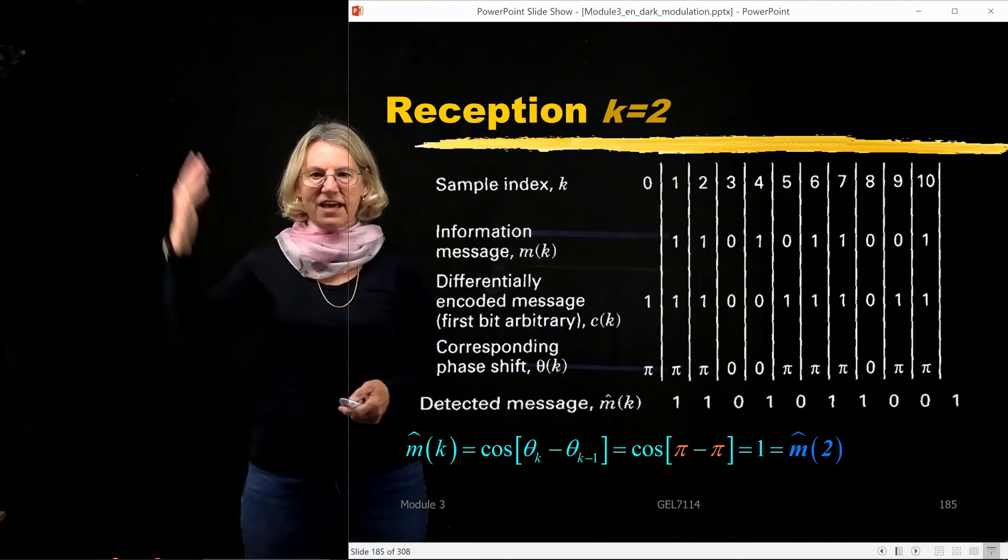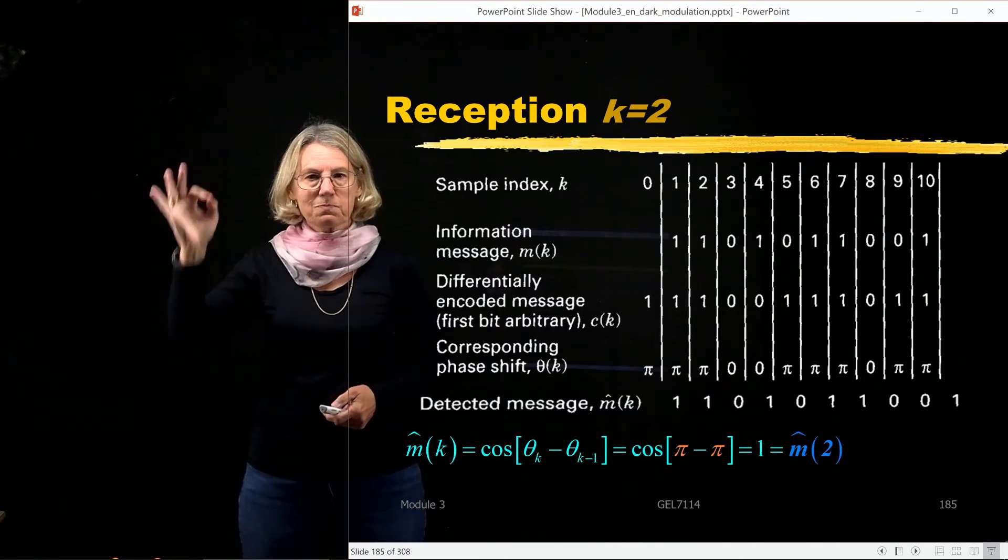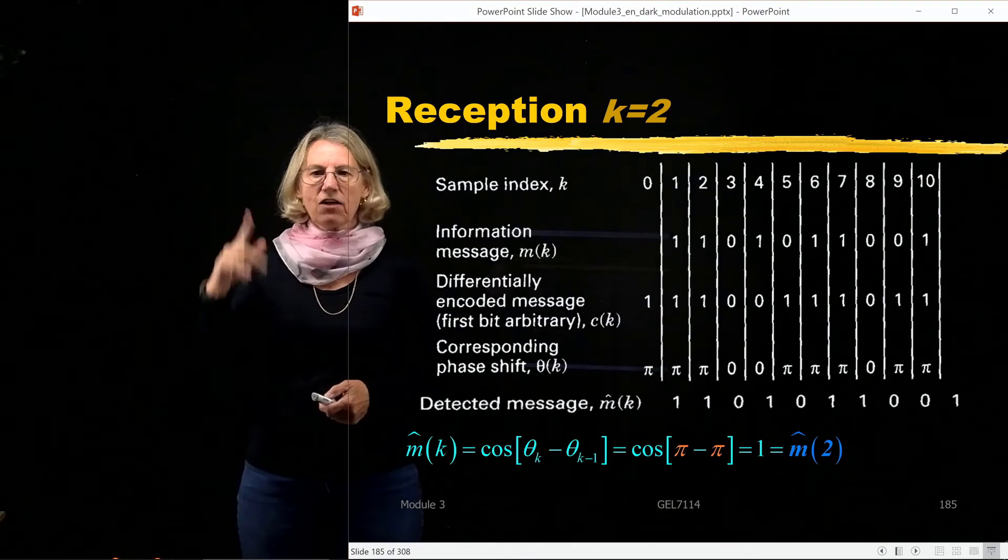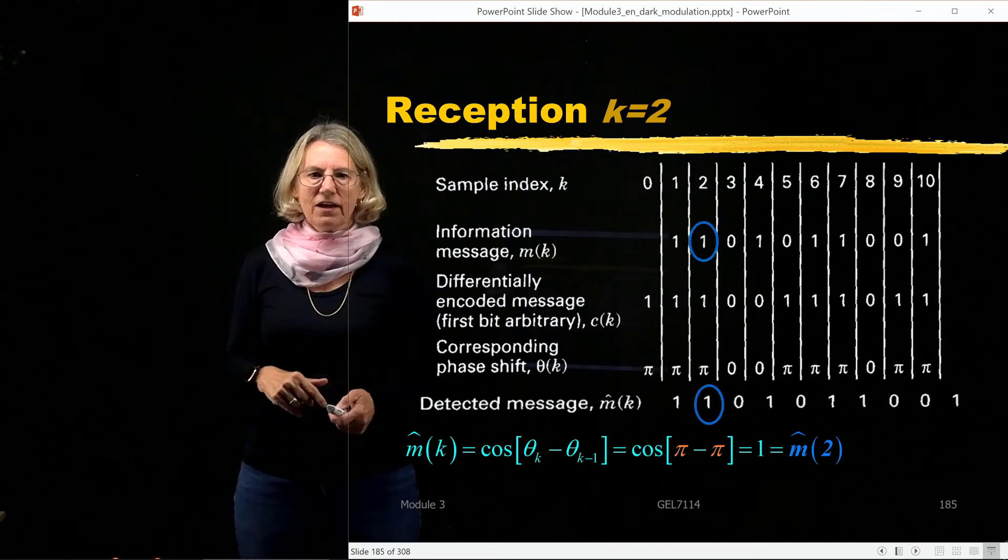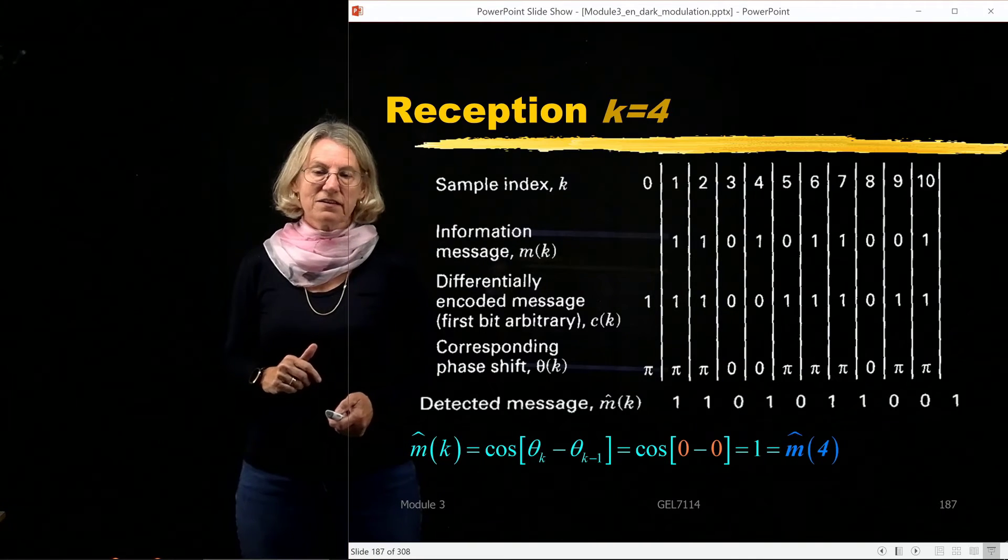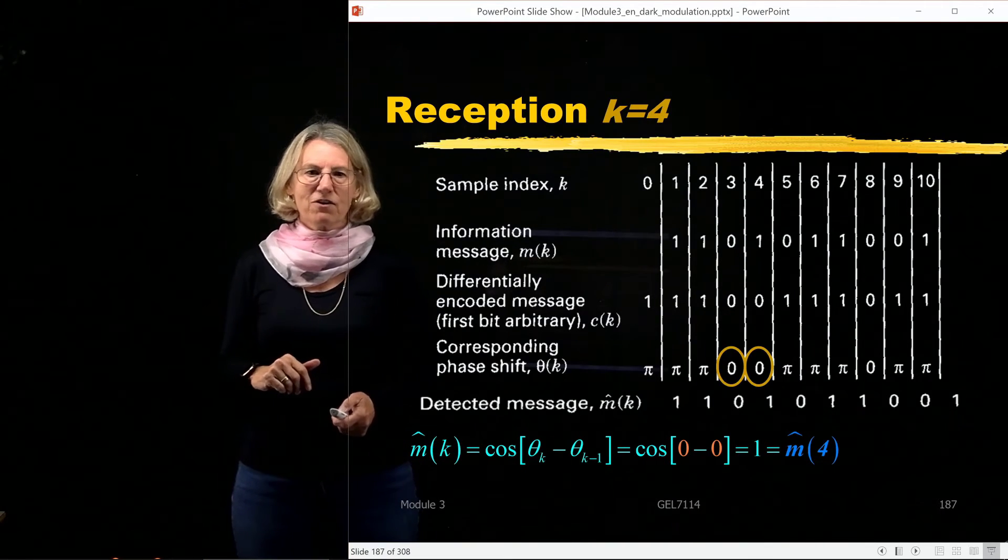So you can see that that pre-coding we did was spot on, because that means that when we get here with this self-reference, that we will indeed get the correct estimate of the transmitted bit out of our receiver.